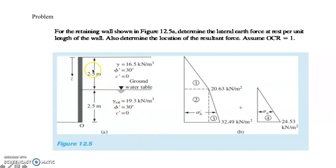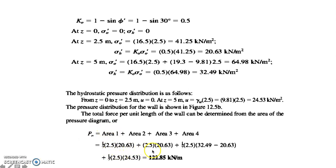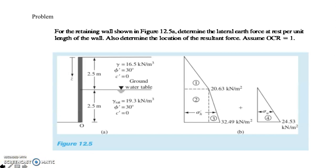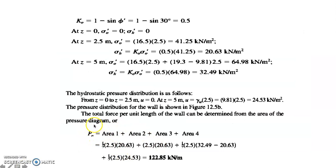To compute the resultant force, add all areas in the pressure diagram. We have 4 areas: Area 1 (triangle) + Area 2 (rectangle) + Area 3 (triangle) + Area 4 (pore water pressure). The total force per unit length of the wall acting on the retaining wall is 122.85 kN/m.